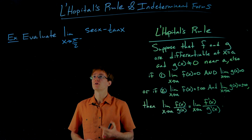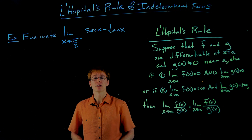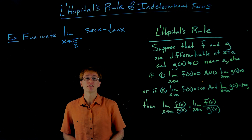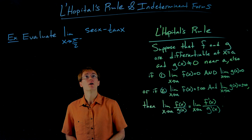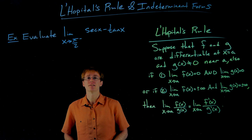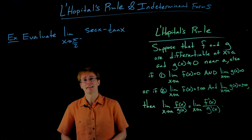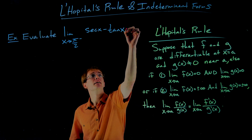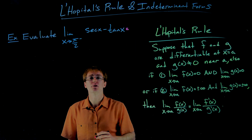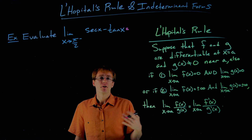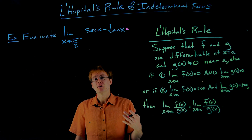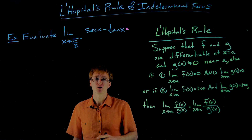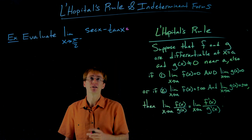In this example, we're trying to evaluate the limit as x approaches π/2 from the left of secant of x minus tangent of x. Remember, the first thing we always try is direct substitution. Here I'm using my knowledge of the graphs of these functions and the fact that we have vertical asymptotes at π/2 to find these limits.